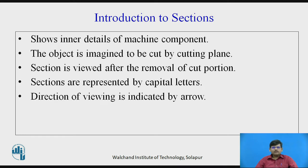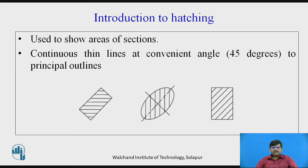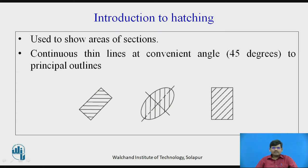To show section views, we require hatching. When we take a section, we show hatching lines or section lines to indicate where a section has been taken. These are continuous lines drawn at a convenient angle — not exactly vertical, not exactly horizontal — 45 degrees is the angle mostly used. The distance between the lines is constant, so they are equally spaced. Equi-spaced and inclined at 45 degrees is the standard rule for drawing hatching lines.